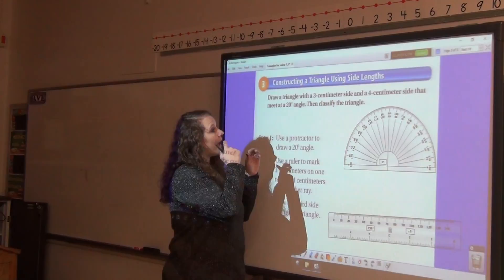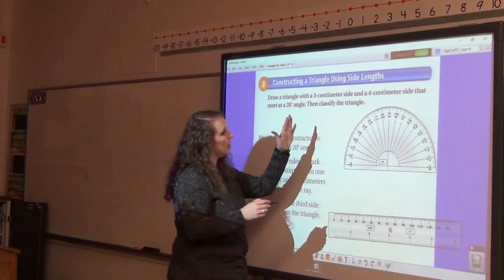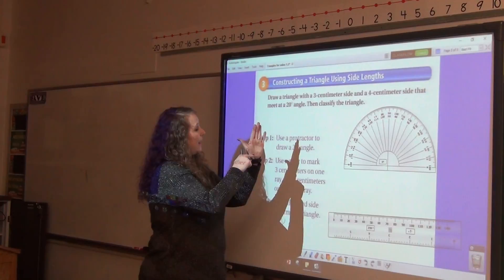What you would do is draw a 3-centimeter length. Then you would put the zero of your protractor, which is this spot right here, on that line. And from there, find your 20-degree angle.